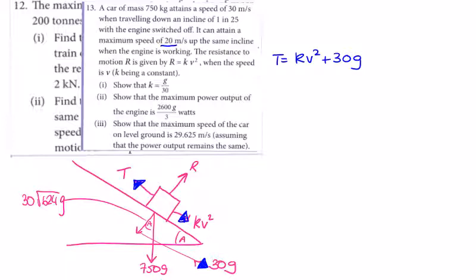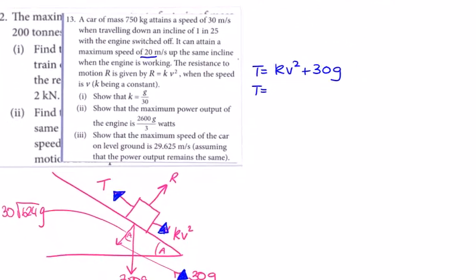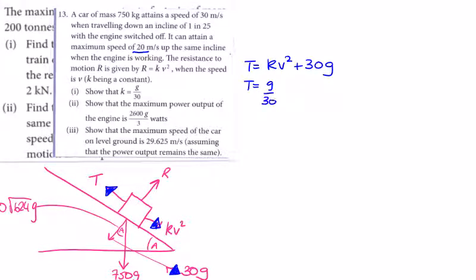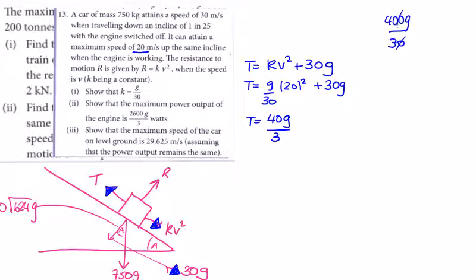We can find T because max speed is 20 and k equals g/30. So T equals (g/30) times 20² plus 30g, which is 400g/30 plus 30g. That's 40g/3 plus 30g. Converting: 40g/3 plus 90g/3 gives 130g/3 as the tractive effort.